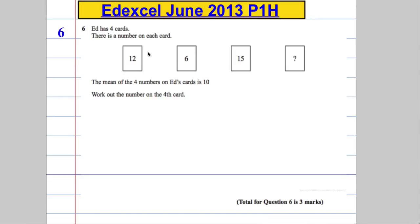Okay, question 6. We're told that Ed has 4 cards and there's a number on each card: 12, 6, 15, and something. The mean of the 4 numbers on Ed's cards is 10 and we're asked to work out the number on the 4th card.